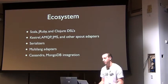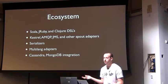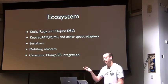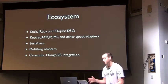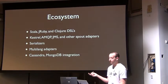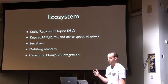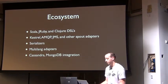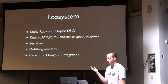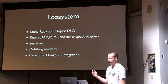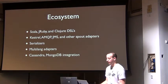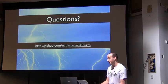Storm has a growing ecosystem of companion tools. There are Scala, JRuby, and Clojure DSLs — the Clojure DSL was written by the presenter, the Scala and JRuby DSLs by community contributors. There are lots of spout implementations including Kestrel, AMQP, JMS, and a Kafka one coming soon. People have also contributed serializers, language adapters, and there's Cassandra and MongoDB integration as well.